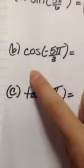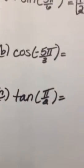The second question is cosine of negative 5 pi over 3. Now you want to take your unit circle also and look for 5 pi over 3.